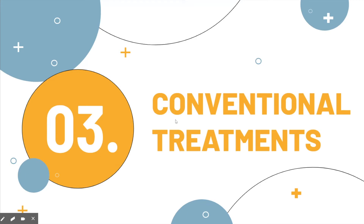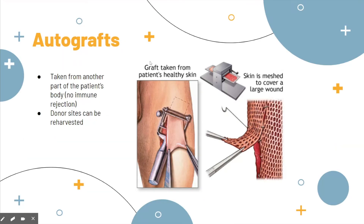We'll be talking about the conventional treatments to treat wounds. The first type is autografts. These are taken from the patient's own skin from any other part of the body, then go through a device to puncture them and make it easier to cover, and are placed on top of the wound area. This is recommended for deeper dermal wounds because these heal much more slowly and inadequately on their own. The healing depends on the thickness of the dermis in the graft — usually thicker is better. The donor sites can be re-harvested multiple times, and since it is made of the patient's own tissue, there won't be any immune rejection.